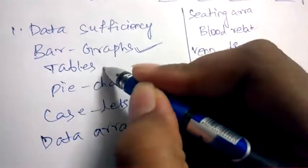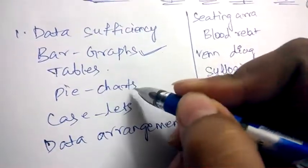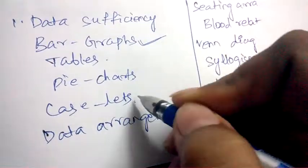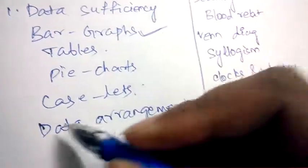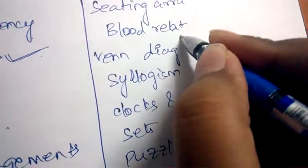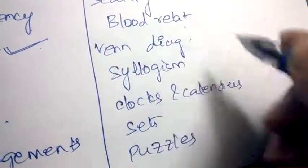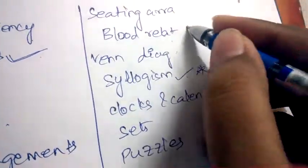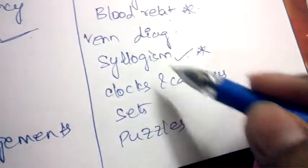Next, problems on tables, problems on pie charts, case-lets which is optional, and data arrangements, seating arrangements, blood relations, Venn diagrams, problems on syllogisms which is very important, blood relations is also very, very important.